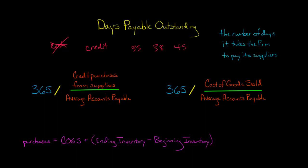And it says something about the company's financial condition. So how do you calculate the days payable outstanding? You take 365, the number of days in the year, and divide it by the accounts payable turnover ratio. If you don't remember, the accounts payable turnover ratio is the number of credit purchases made from suppliers divided by the company's average accounts payable balance.